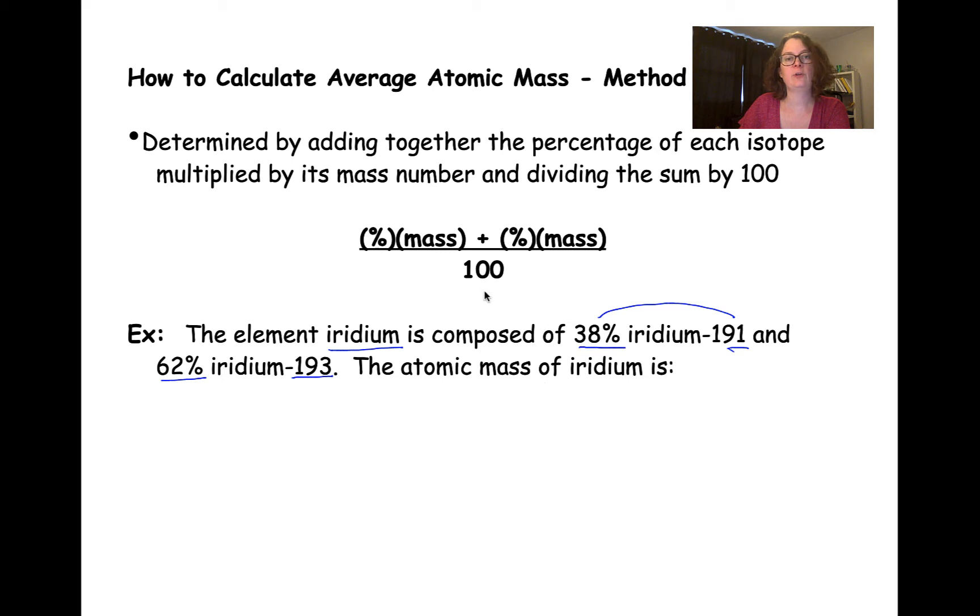So if we use this formula from up here, we'll say 38% times 191 plus 62% times 193.